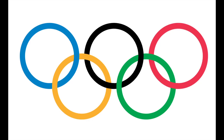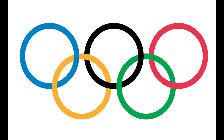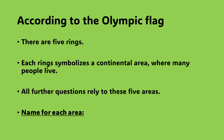Now let's move on to the Olympic flag. This flag has five rings. These rings represent five continental regions that have been inhabited by millions of people for thousands of years. All further questions refer to these five regions, so name them for each of these five regions.